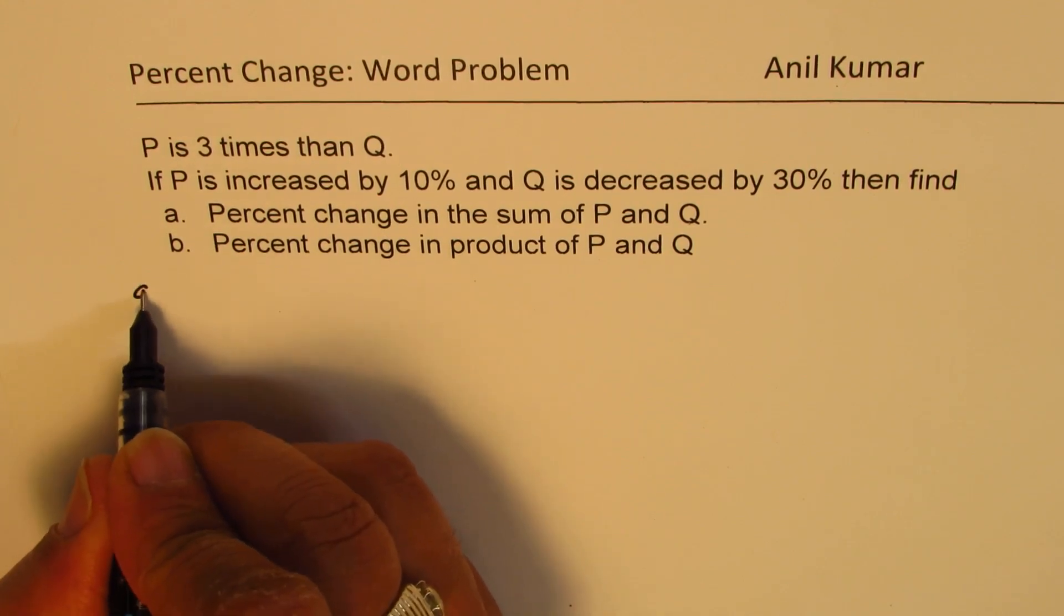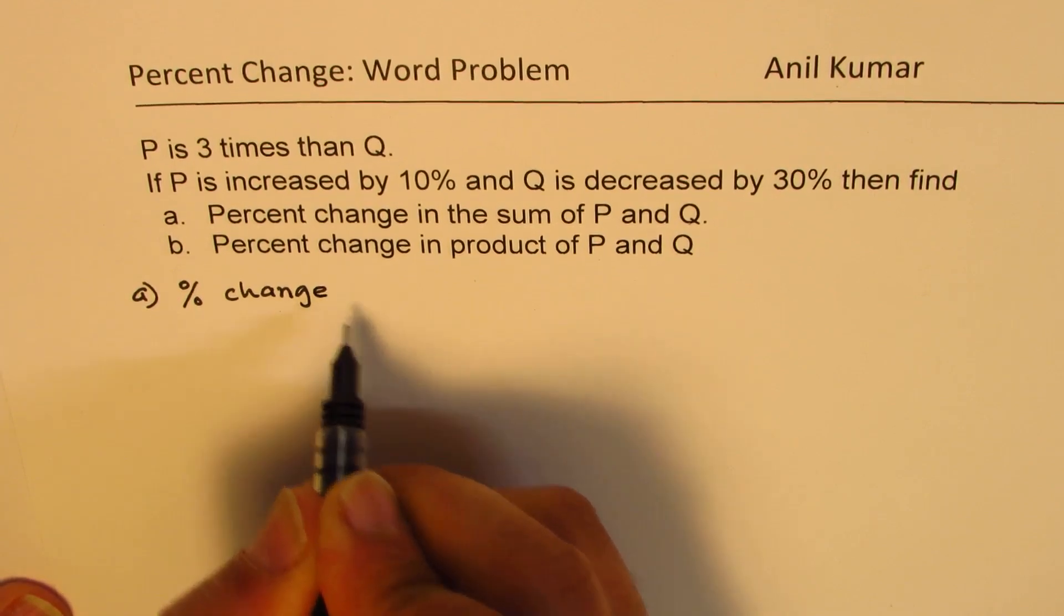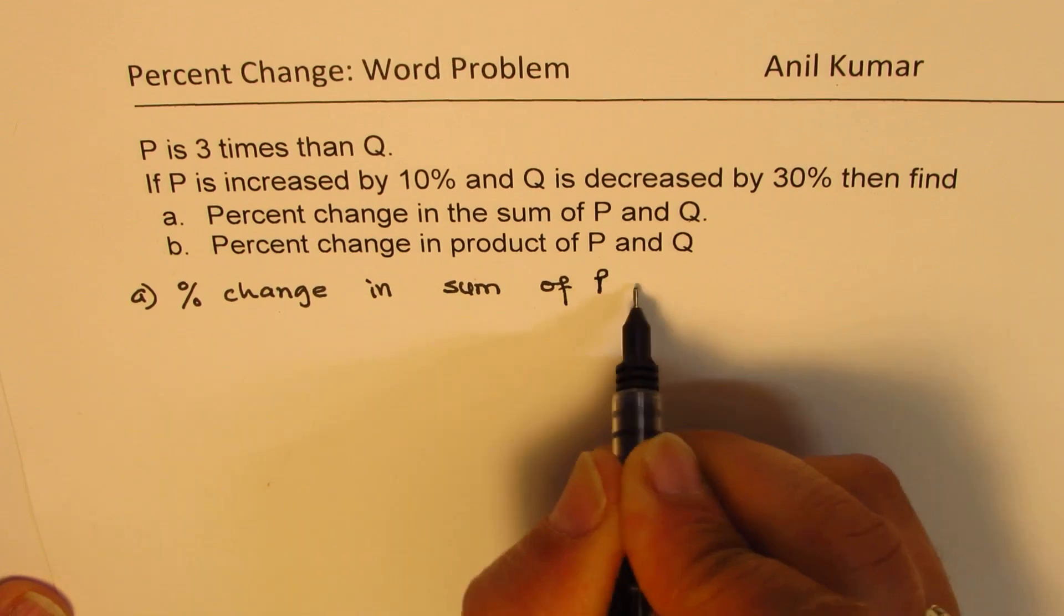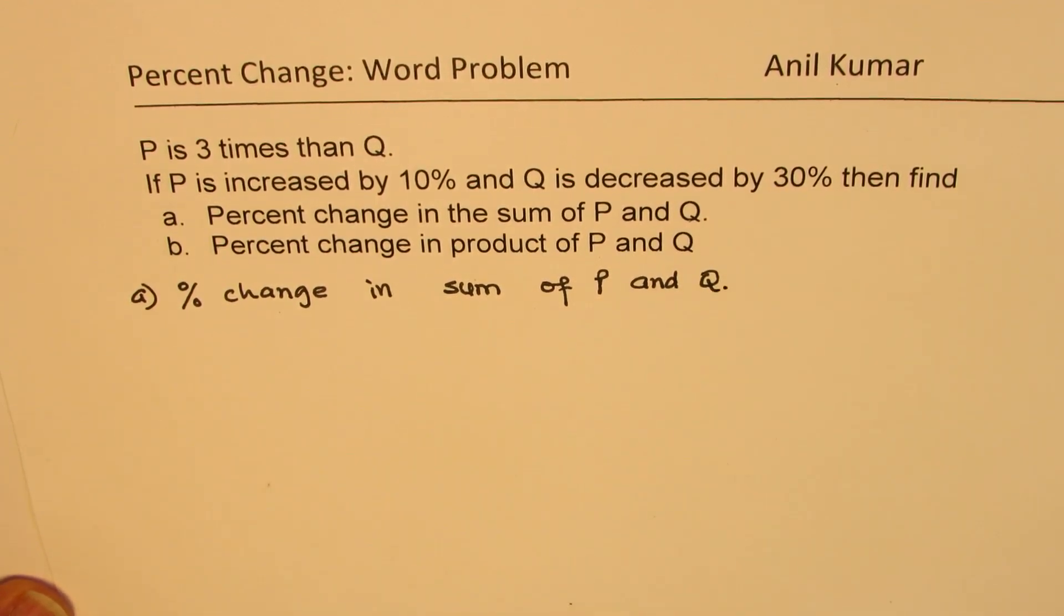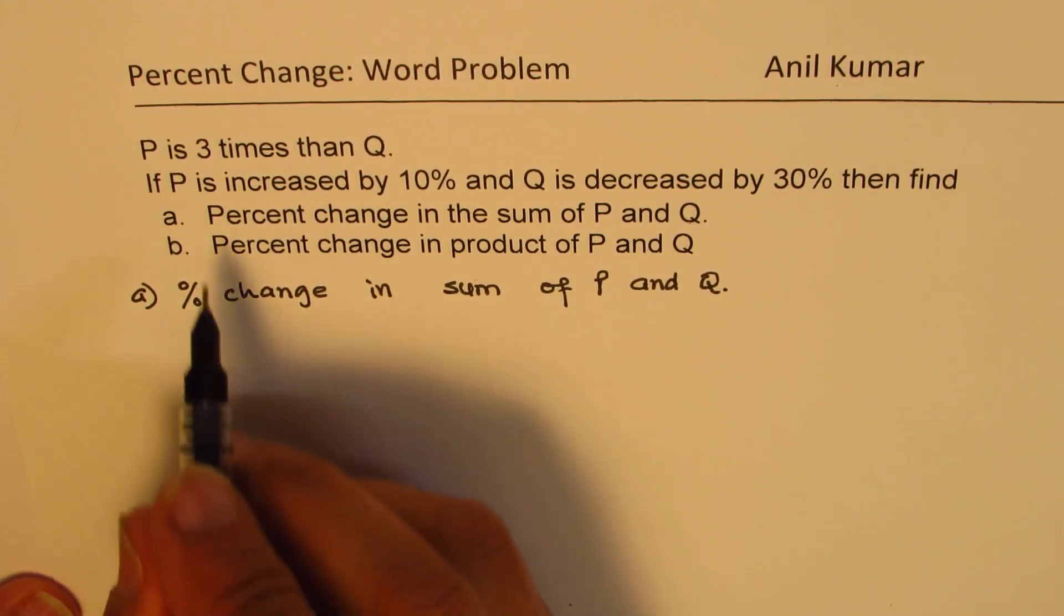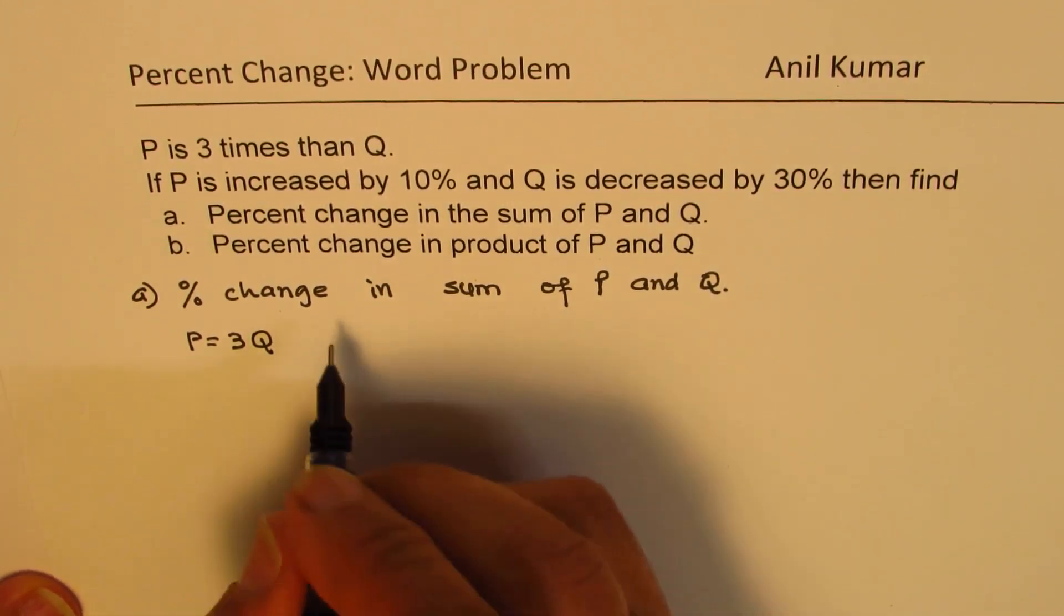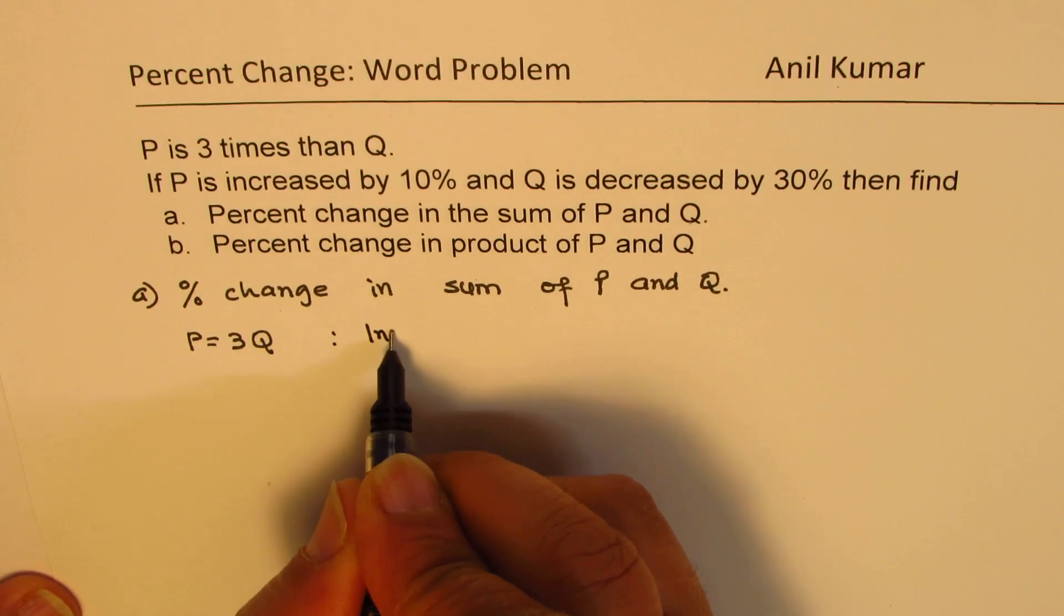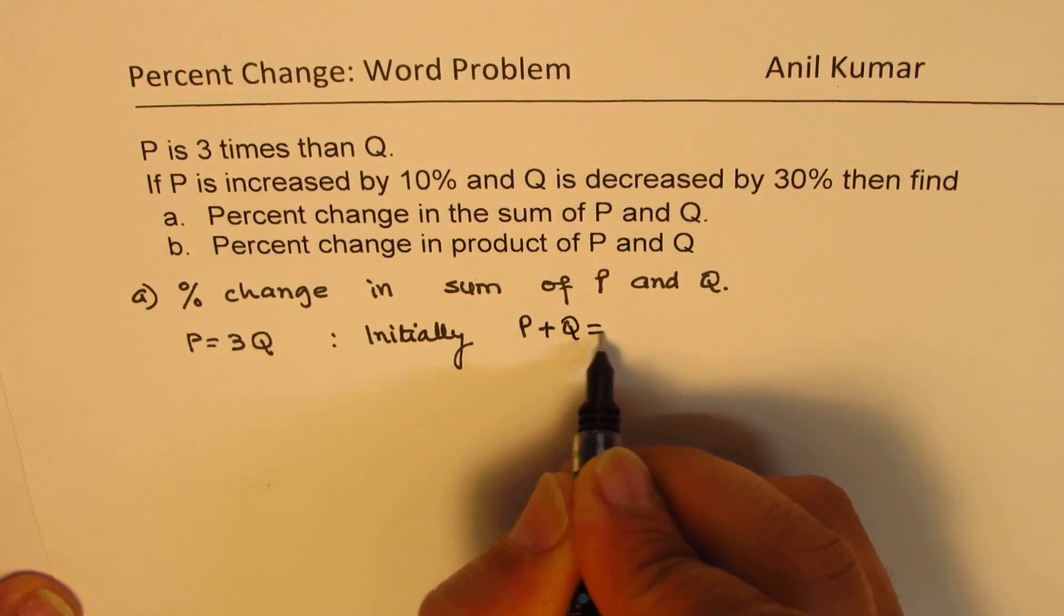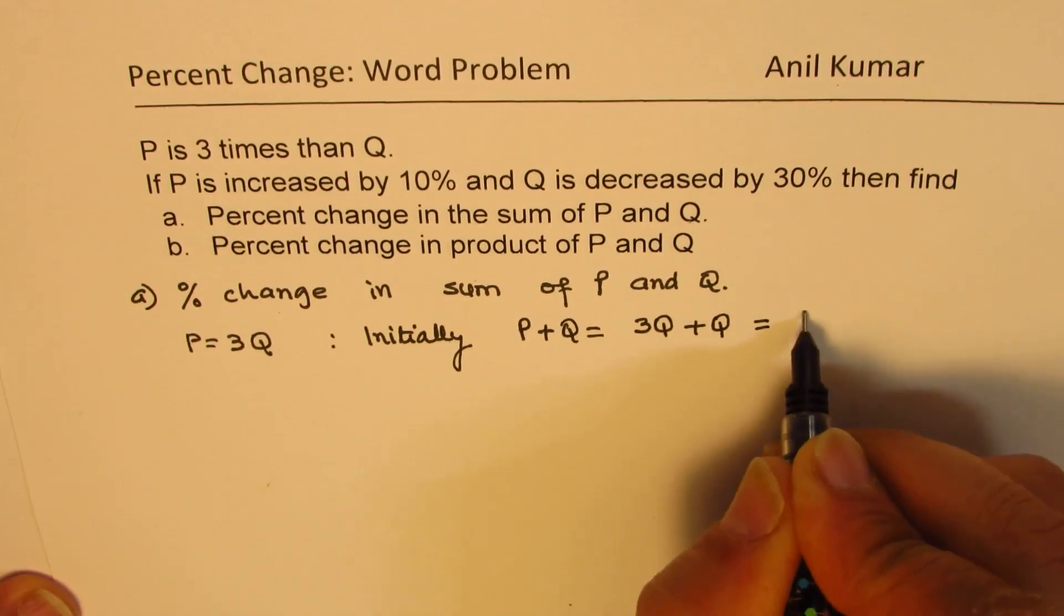Let's first do part A, which is percent change in sum of P and Q. For finding percent change, we have to find first what was originally there. We know P is three times Q, so that gives us that initially P plus Q is equal to 3Q plus Q, which is equal to 4Q.